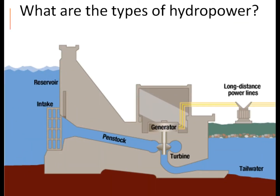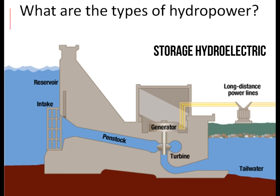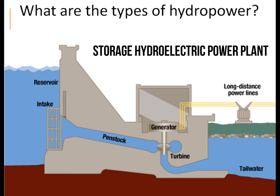2. Storage hydropower. This is the most common type of hydroelectric power plants, which uses a dam to store river water in a reservoir. Water released from the reservoir flows through a turbine, spinning it, which in turn activates a generator to produce electricity.